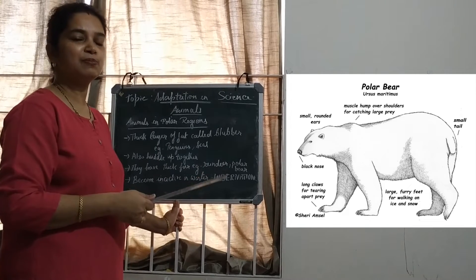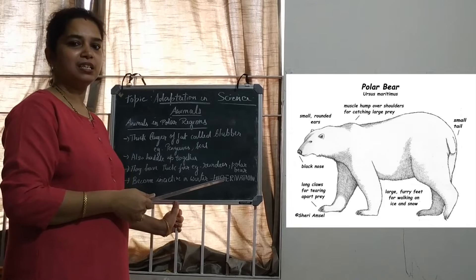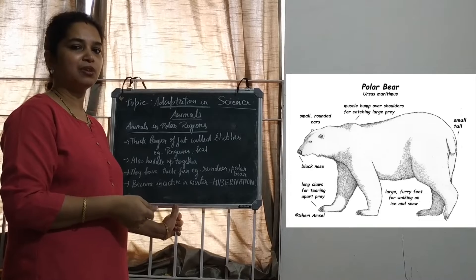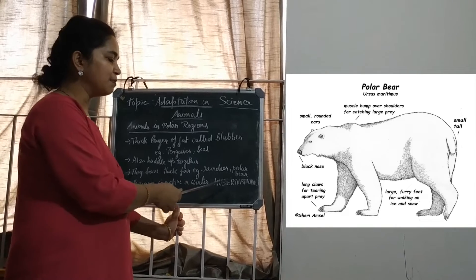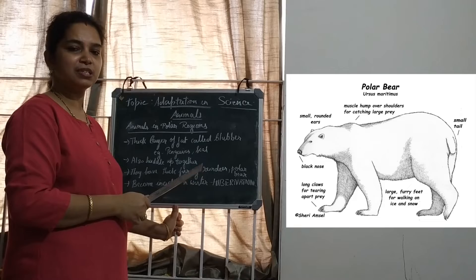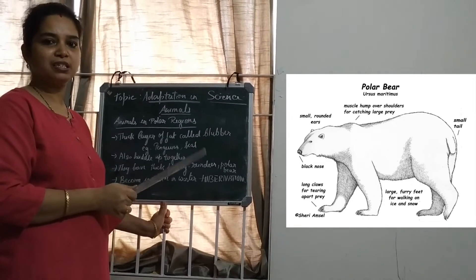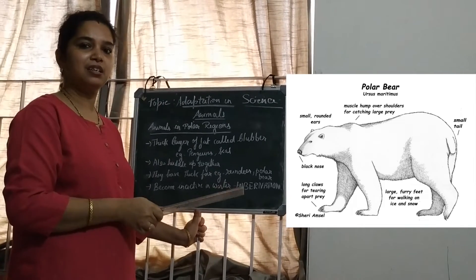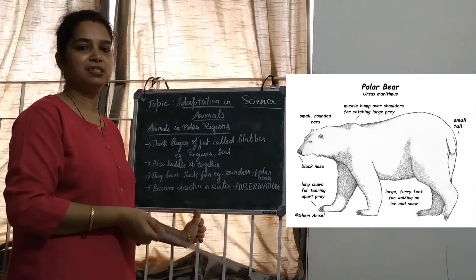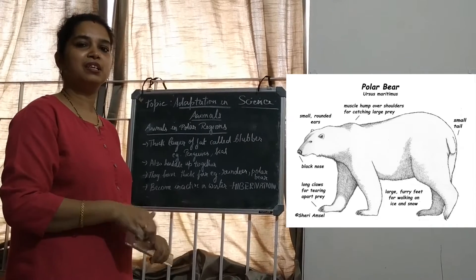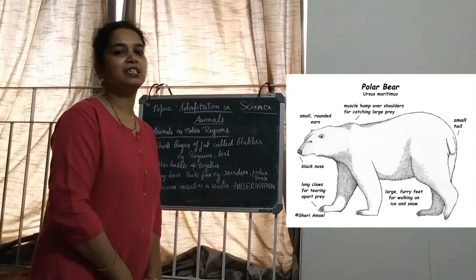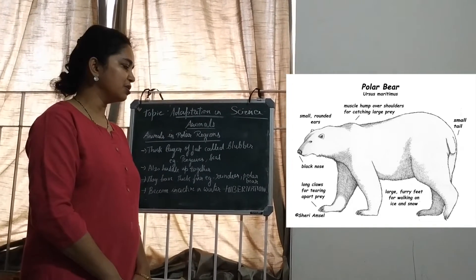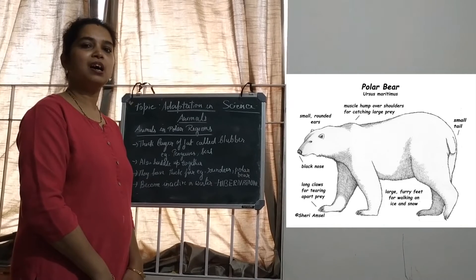Generally the polar bear becomes inactive during winter — they go to sleep in the winter period to escape the extreme cold. This process is called hibernation. Hibernation can also be seen in some land animals like frog, lizard, and snakes. They hide in holes or caves to escape the winter season. They store and consume food in the summer season which they use during winter. So the short sleep during winter is called hibernation.